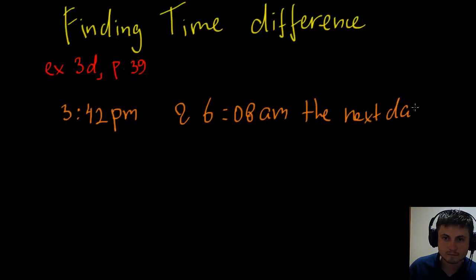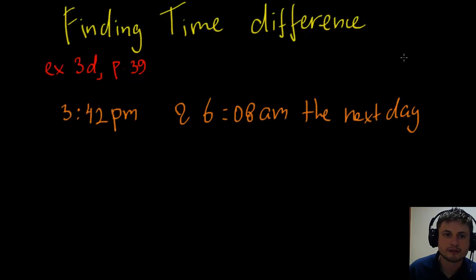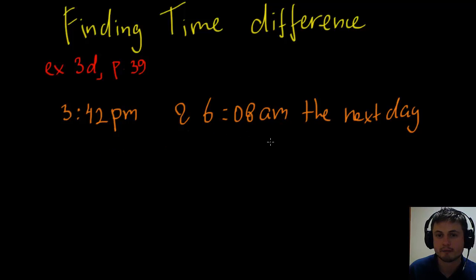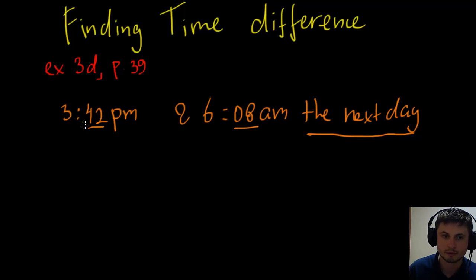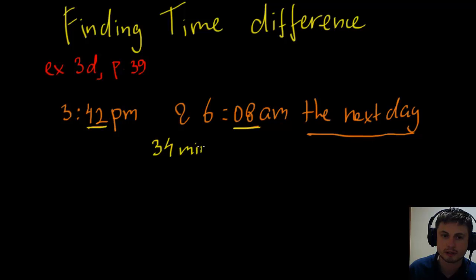This is the actual question — question 3d from page 39: find the time difference between 3:42 PM and 6:08 AM the next day. That's what really caused the confusion. A lot of us found the difference between 42 and 8 minutes, which gave us 34 minutes — but that was actually wrong. So let's find the correct way of doing this.